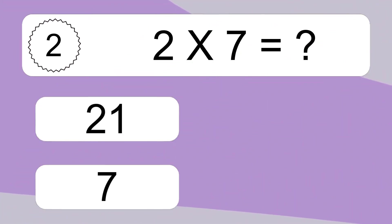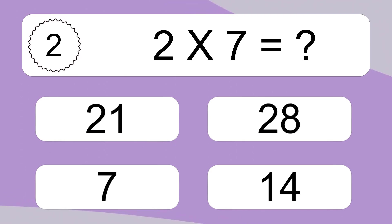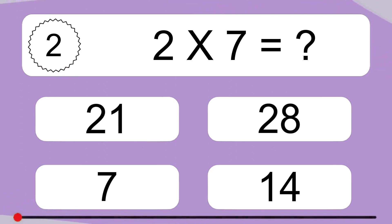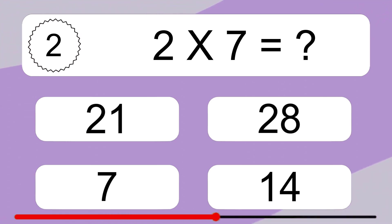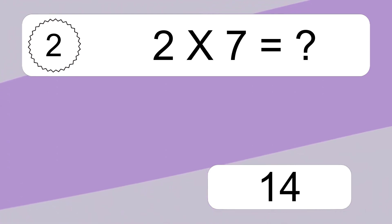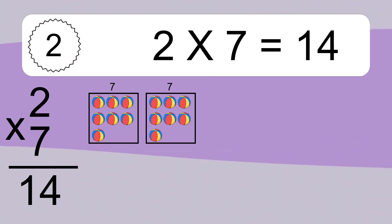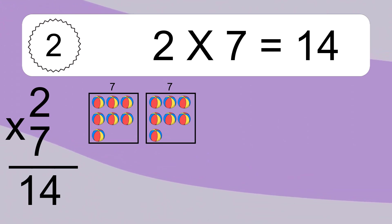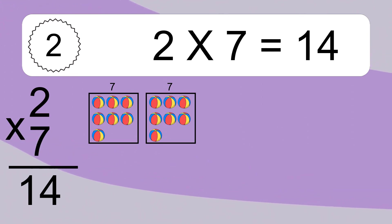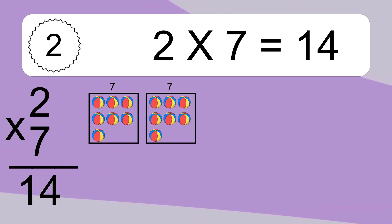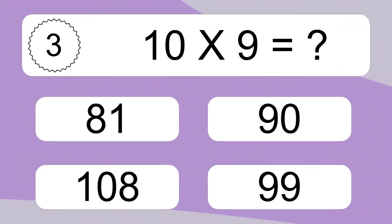2 times 7 equals what? 2 times 7 equals 14. We have 2 boxes, and each box has 7 colorful balls inside. If you count all the balls in all the boxes together, you will have 2 times 7 balls. This equals 14 balls. 10 times 9 equals what?